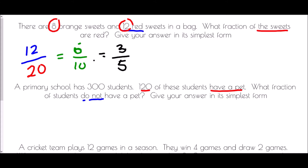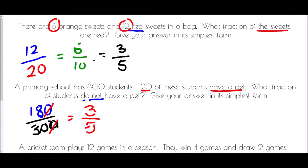If there are 300 students and 120 have a pet, then the rest do not — that is 180 students. So 180 out of 300 do not have a pet. We divide by 10 to get 18 over 30, then divide by 6, since 6 goes into both 18 and 30. That gives us 3 over 5 — so three fifths of the students do not have a pet.